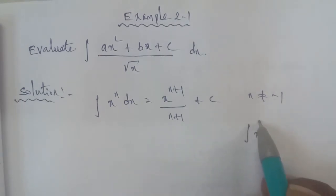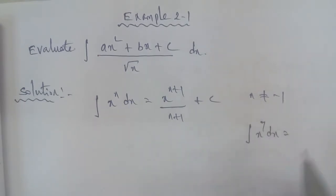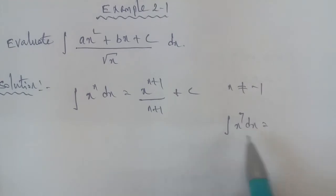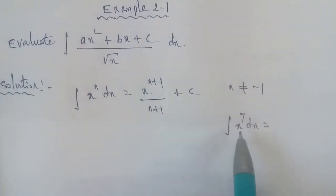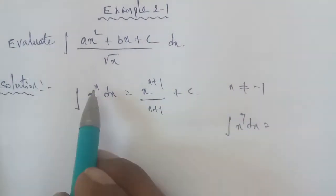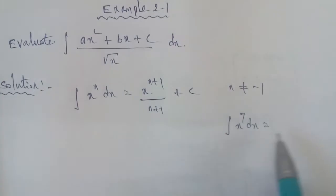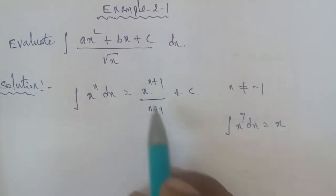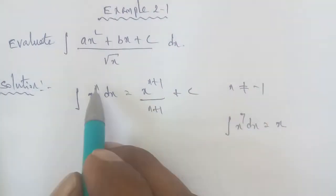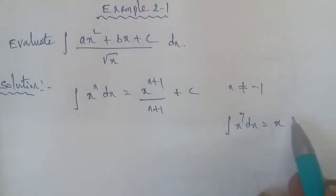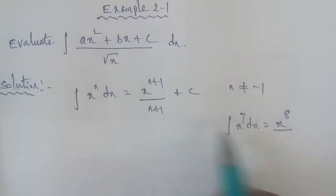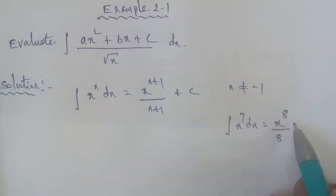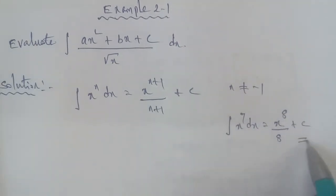For example, the integral of x power of 7 dx. Here we substitute x power of n, where n equals 7. Applying the formula: x power of n plus 1 gives x power of 8, divided by n plus 1, which is 7 plus 1 equals 8, plus constant c. That is the answer.